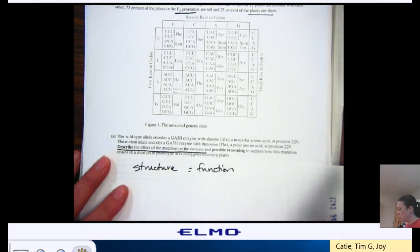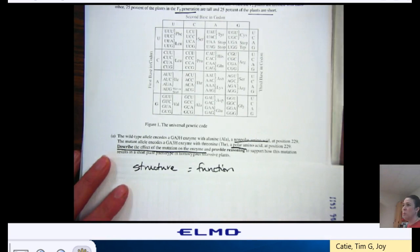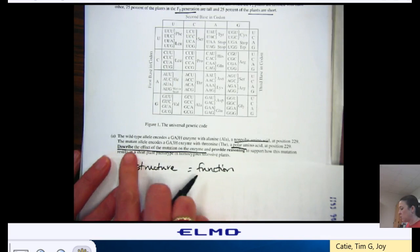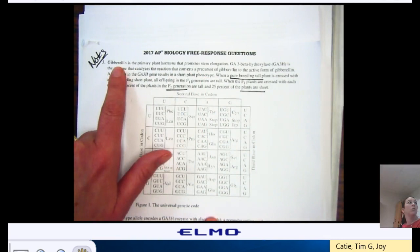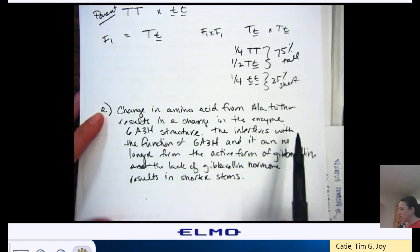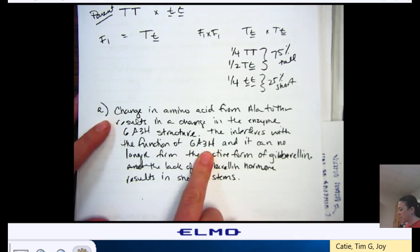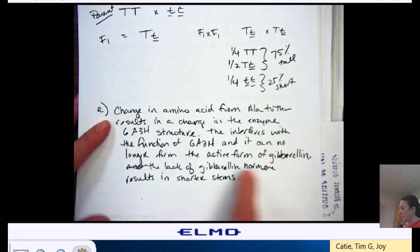So, what changed in the structure of the enzyme? Yeah, it said right here that we went from alanine to threonine. So, my primary structure of amino acids changed, and I went from a nonpolar amino acid to a polar one. That R group on the amino acid has different properties. So, describe the effect of mutation on the enzyme. Well, the enzyme's shape is different because of the change to the primary structure in the amino acid sequence. So, the enzyme that was responsible for making this plant hormone to make tall plants doesn't work any longer because its structure changed. Change in amino acids from alanine to threonine results in a change in the enzyme's structure. This interferes with the function of the enzyme, and it can no longer form the active form of gibberellin. And the lack of the gibberellin hormone results in shorter stems or shorter plants.